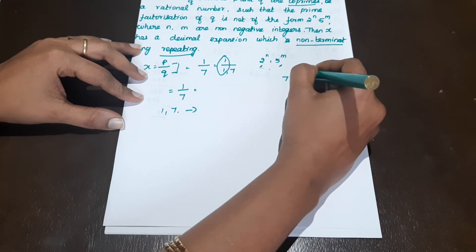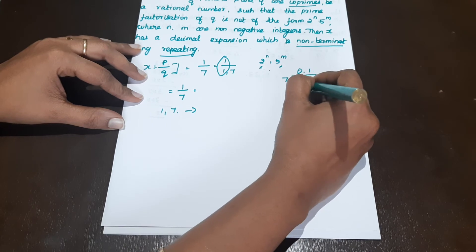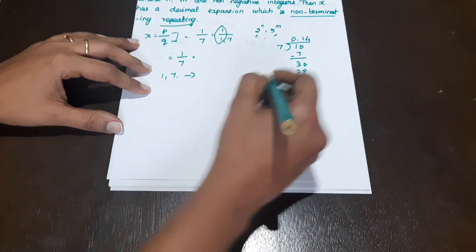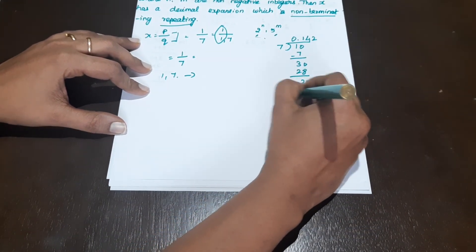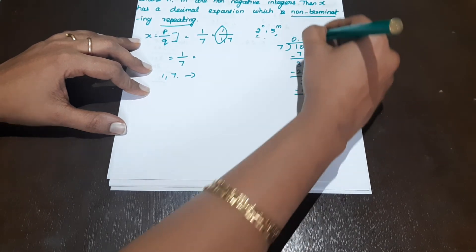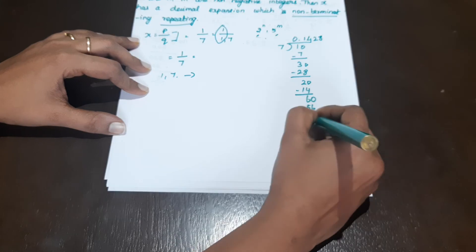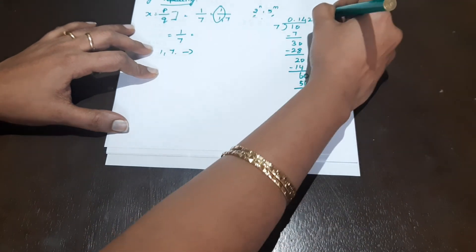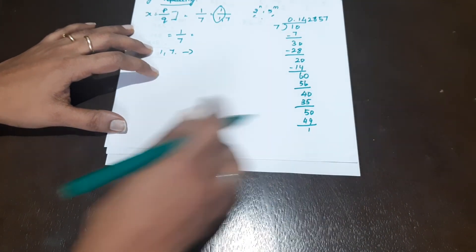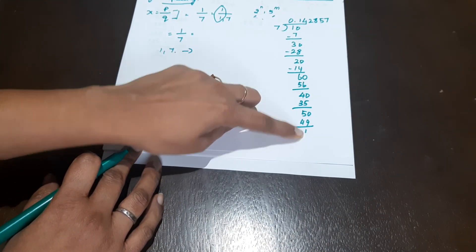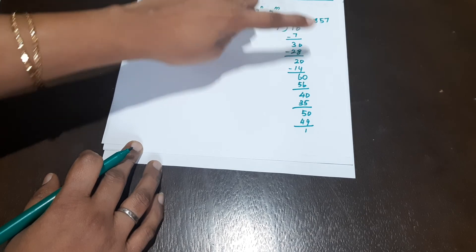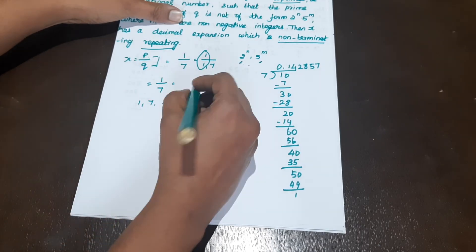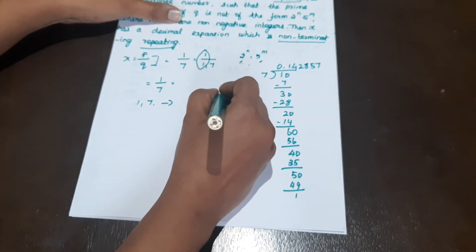Since 7 doesn't go into 1, we get 0 point. 10 ÷ 7 = 1, balance 3. 30 ÷ 7 = 4 (4×7=28), balance 2. 20 ÷ 7 = 2 (2×7=14), balance 6. 60 ÷ 7 = 8 (8×7=56), balance 4. 40 ÷ 7 = 5 (5×7=35), balance 5. 50 ÷ 7 = 7 (7×7=49), balance 1. Now we're back to 1 — we started with 1, so the decimal is 0.142857 and it repeats.